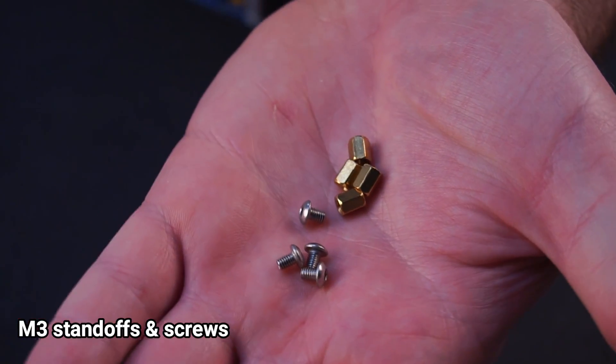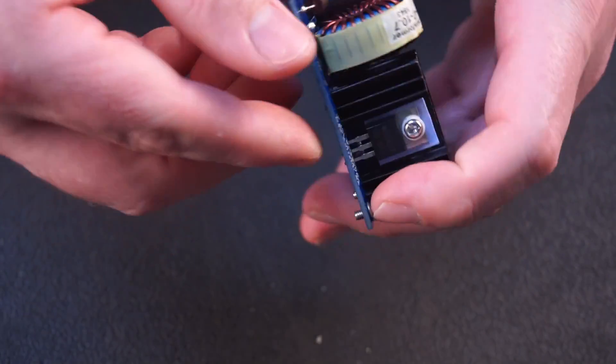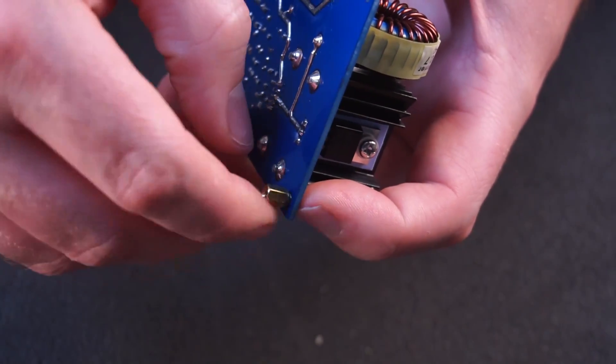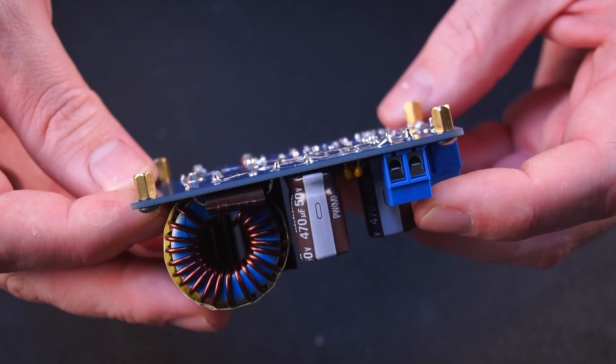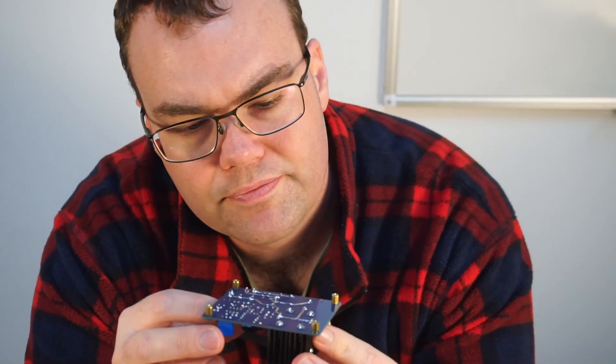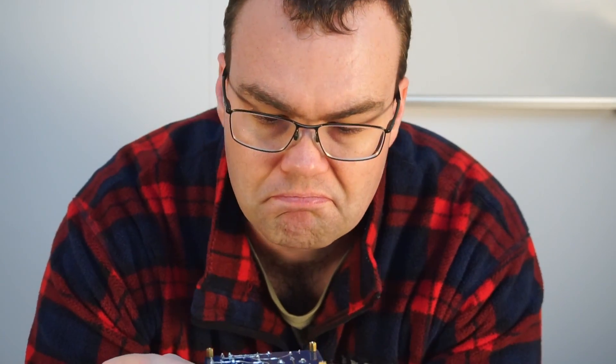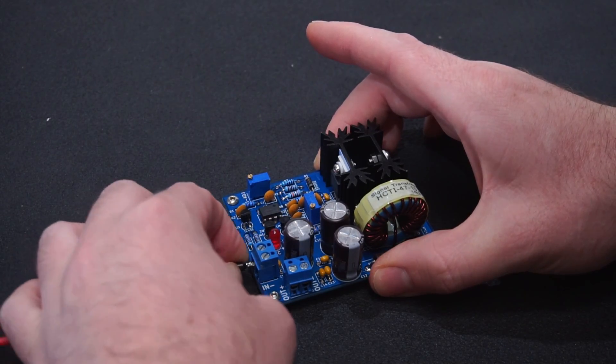Included in the kit set is a set of M3 screws and standoffs to install in the mounting holes if you require them. And lastly before connecting your finished buck converter up to power, give it one last visual inspection and make sure no connections have been missed or bridged with solder. If all looks good now's the time to connect it to a power source.